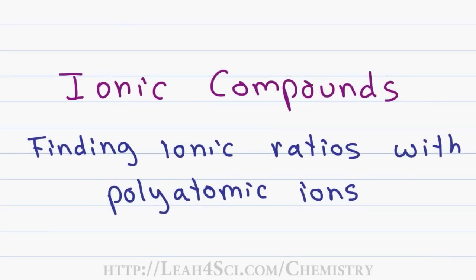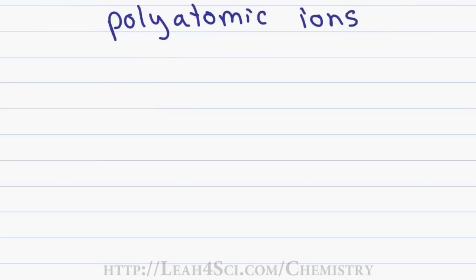In part 3 of this series, we looked at how you find the ratio of ions to form an ionic compound but we only looked at monoatomic ions. Now what happens when you try to form an ionic compound using polyatomic ions?